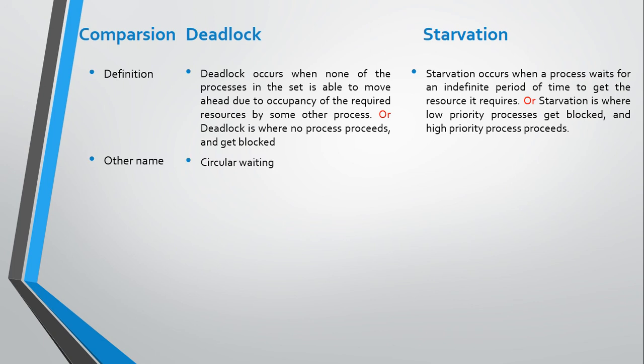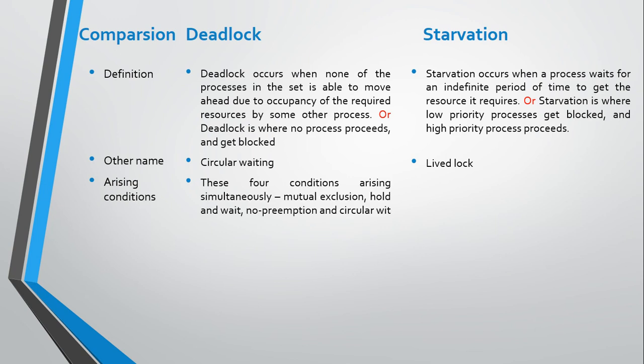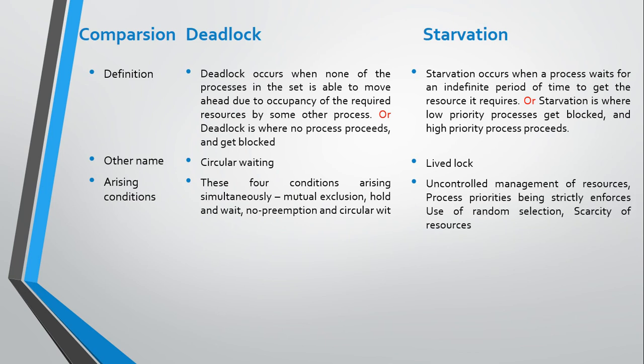Other name: deadlock is also called circular waiting, while starvation is a livelock. Arising conditions: there are four conditions that arise simultaneously in deadlock — mutual exclusion, hold and wait, no preemption, and circular waiting. In starvation: